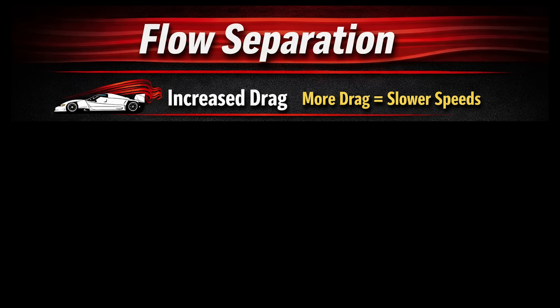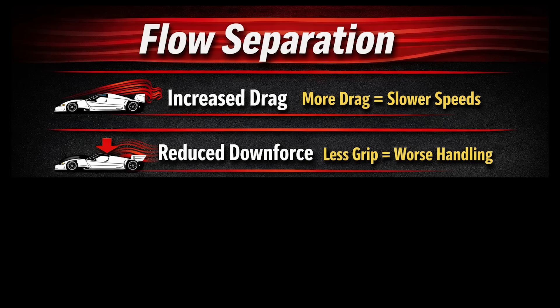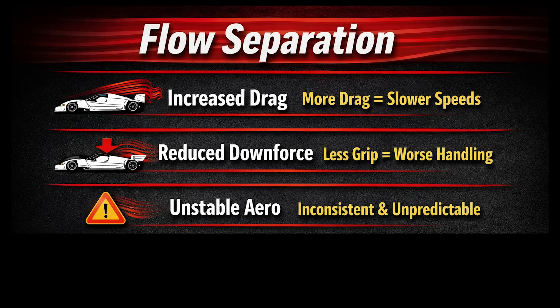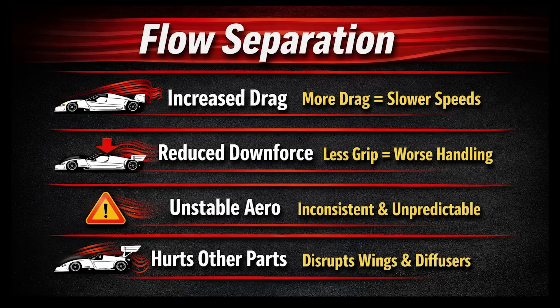On a racecar, that's bad for a few key reasons. It increases drag — when airflow separates, it leaves behind a low-pressure turbulent wake that literally pulls the car backwards. It also kills downforce. Racecars rely on clean, attached airflow to create low pressure on wings, floors, and bodywork. Turbulent air is just unpredictable. Downforce can suddenly change with speed or steering, and it can make the car feel inconsistent in the corners or harder to drive at the limit.